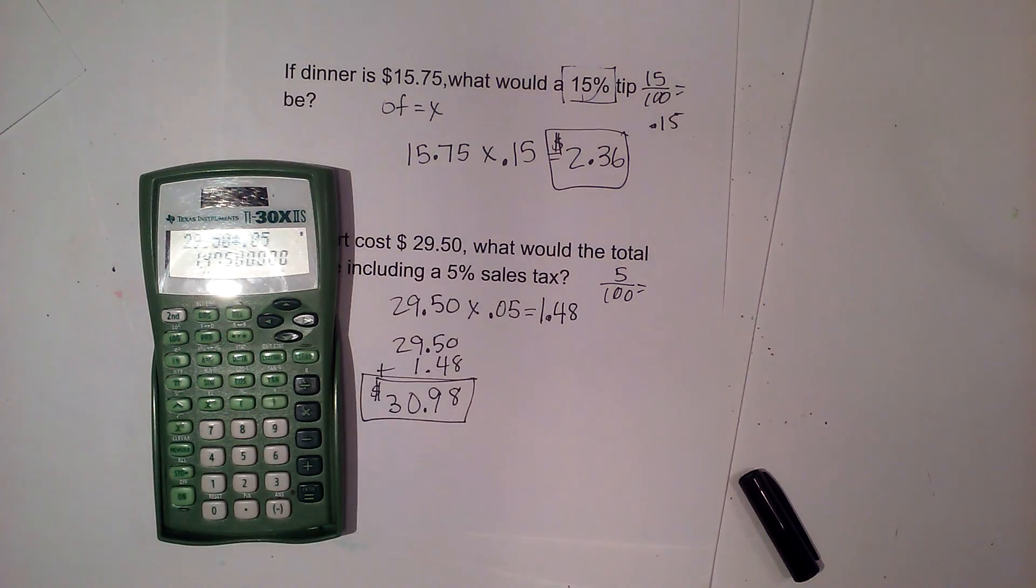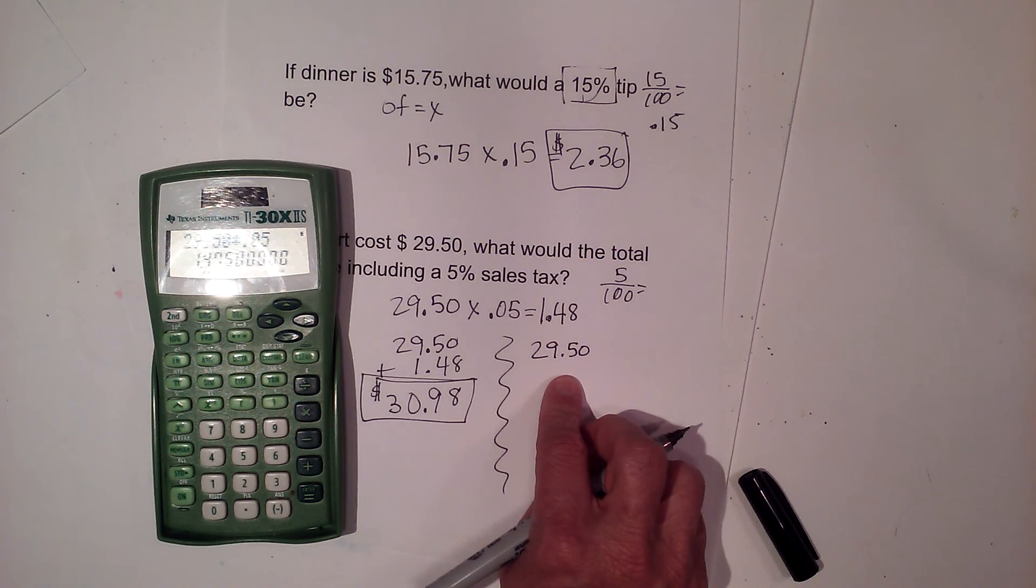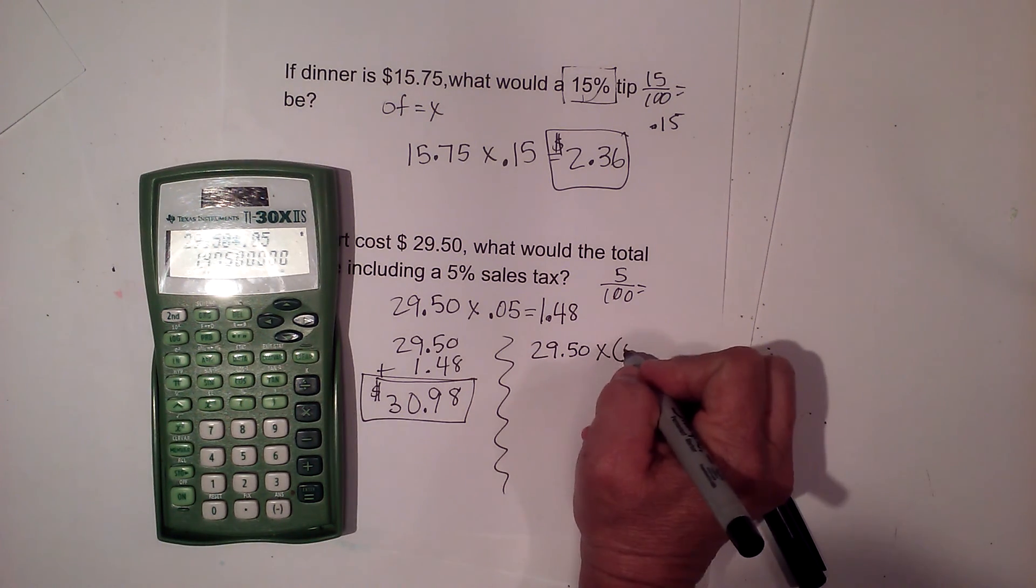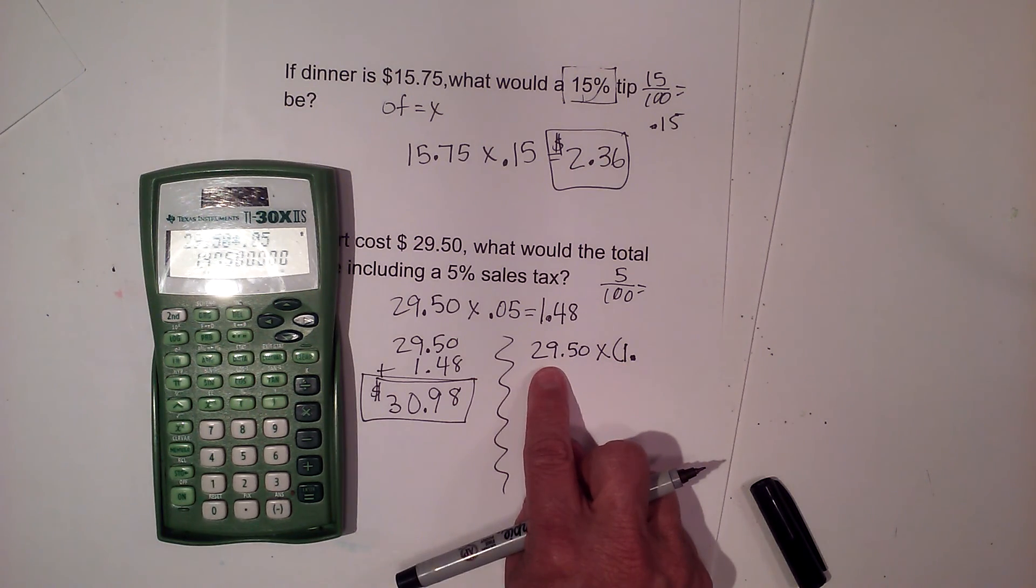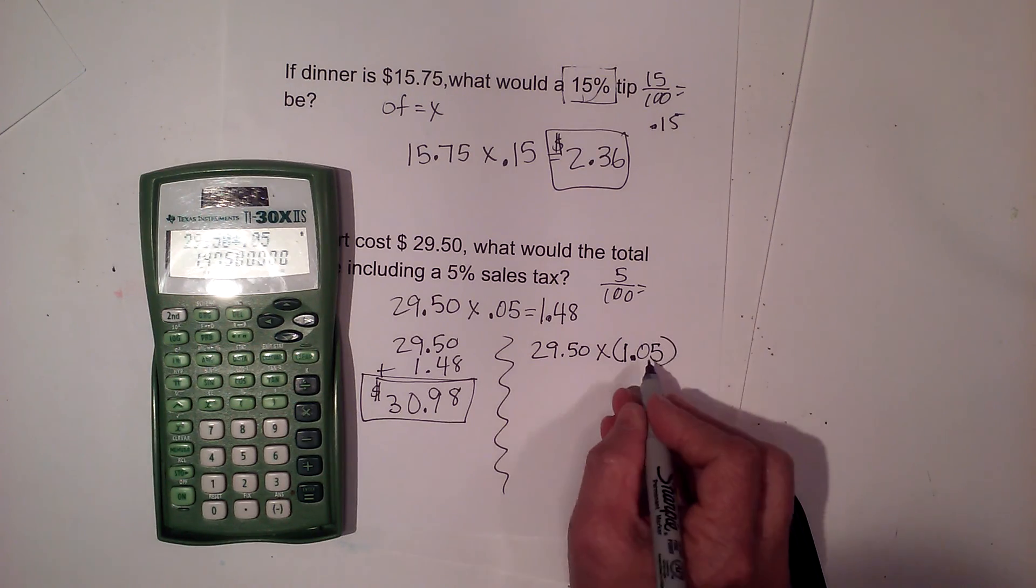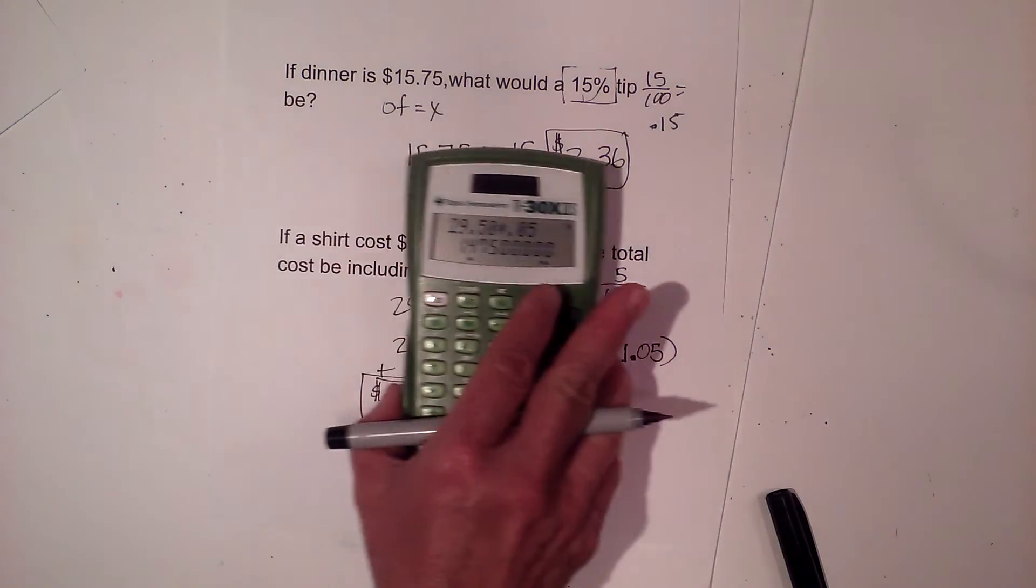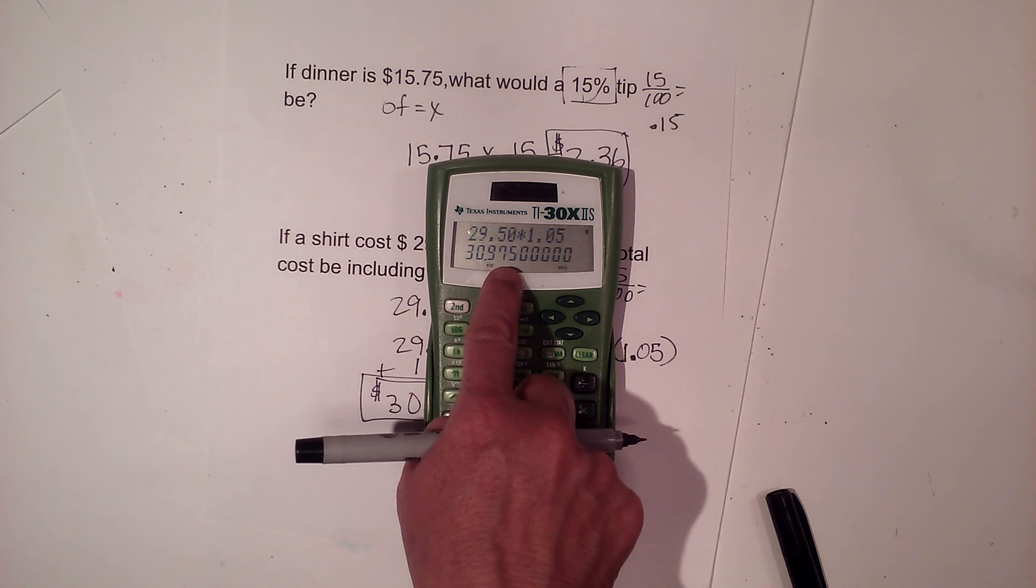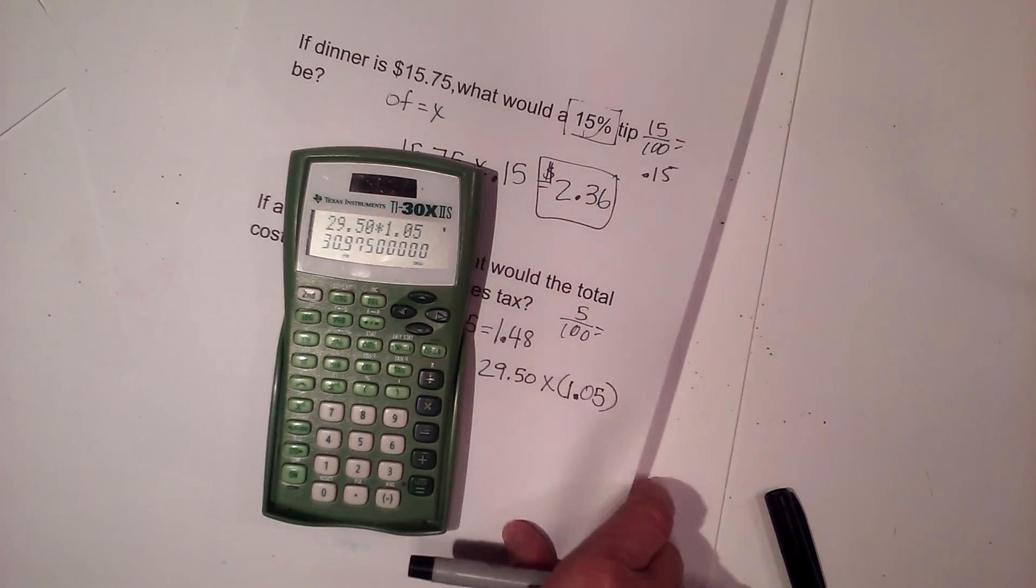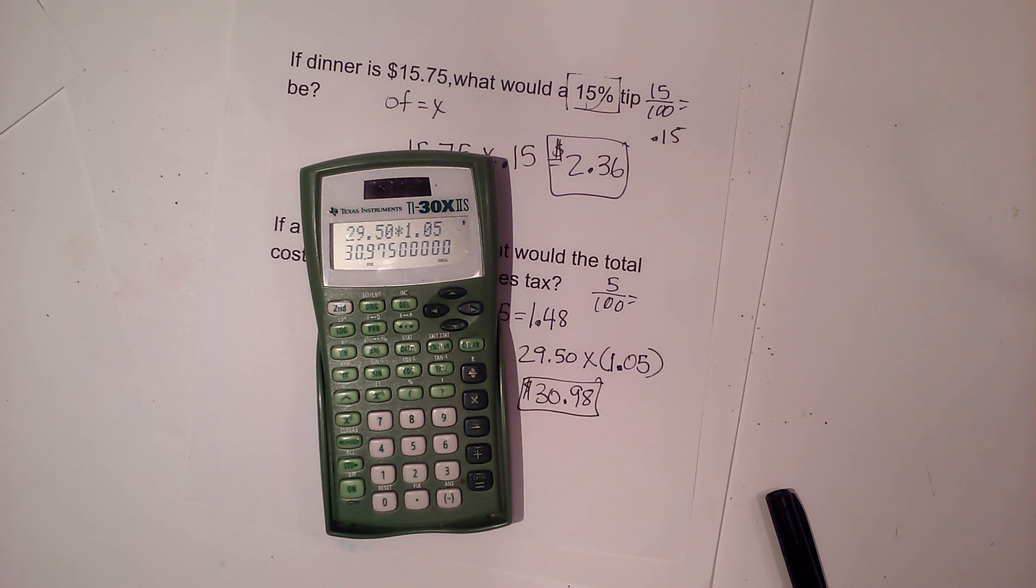Now the second method, you can just multiply everything one time. You can take $29.50, and I need to pay for the shirt, and I have to pay the tax. Well, the shirt is going to cost $29.50. So I'm going to multiply it by one whole number, 100% of $29.50 is $29.50, plus 5% tax, which is 0.05. So if I take $29.50 times one whole number 100% plus 0.05, the tax, I can get the price all at once. $29.50 times 1.05. And that gives me $30.98. But this time, I have only had to multiply it once. I hope this video was helpful.